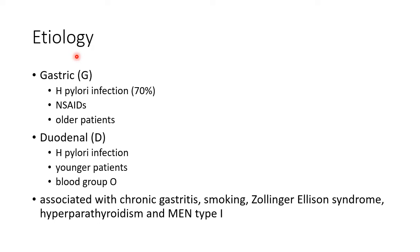Let us see about the etiology of peptic ulcer disease. There are two types: gastric ulcer and duodenal ulcer. Risk factors for gastric ulcer include H. pylori infection, NSAIDs, and older patients. Risk factors for duodenal ulcer include H. pylori infection, younger patients, and O blood group.